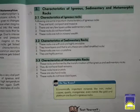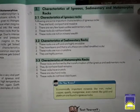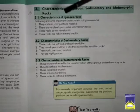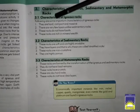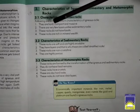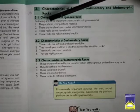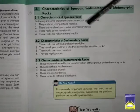Firstly, we will discuss the characteristics of igneous rock. Igneous rocks are hard, compact, and massive. There are very few layers in these rocks, unlike sedimentary rocks which form layers. These rocks do not contain fossil fuels, and they are highly rich in minerals.